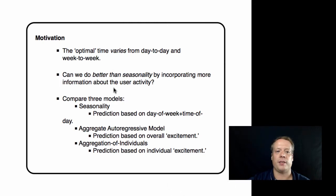Now the optimal time varies from day to day and week to week. So the question is, can we do better than a straight up seasonality model? Seasonality model in this case does not mean like spring or fall. Instead what we mean is just a time-based pattern that seems to be the same going on and on. We're going to compare our aggregation of individuals model, where we take all the causal state models and aggregate their predictions, to a seasonality model and to an aggregate auto-regressive model. An aggregate auto-regressive model takes our seasonality model but also adds in local excitement from the past.